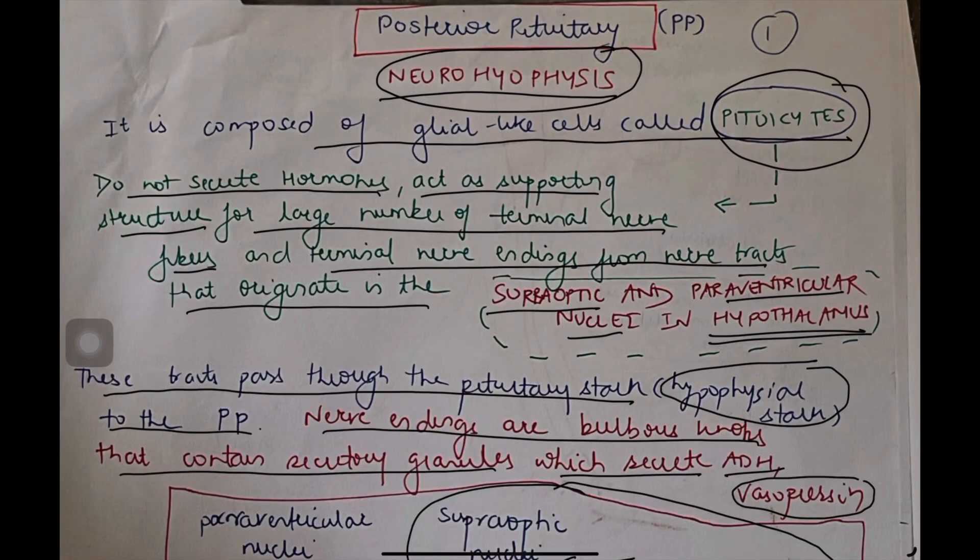Good morning students. Today I am going to talk about a hormone of the posterior pituitary gland called anti-diuretic hormone. This is my handwritten notes. You can write this answer in an exam for 10 marks or 5 minutes. Let's start.